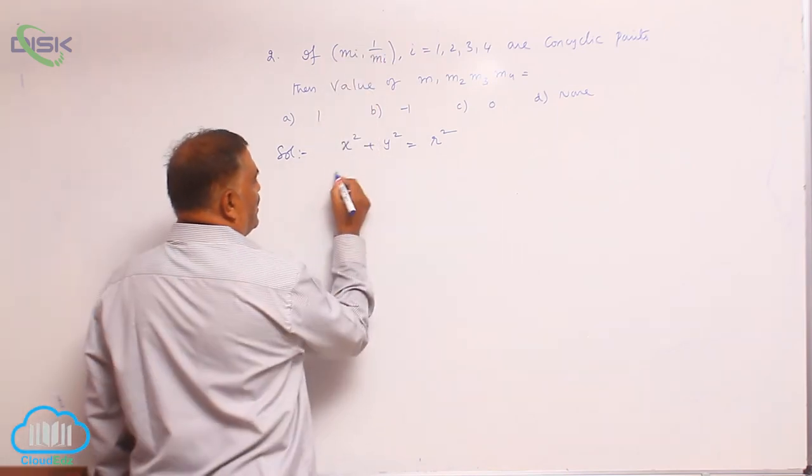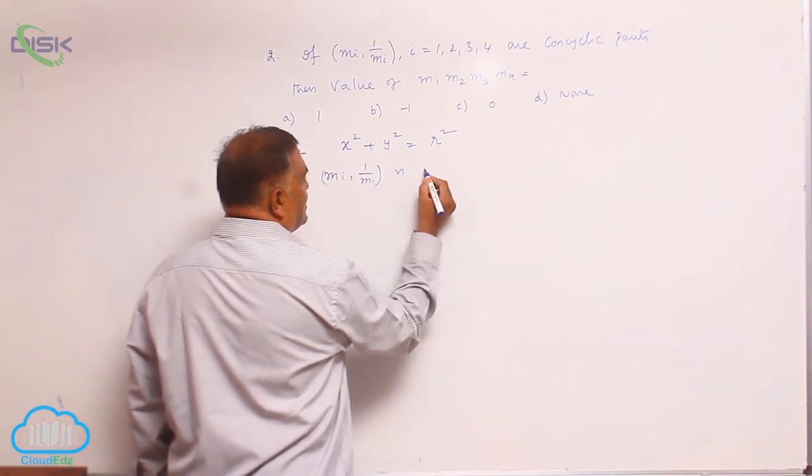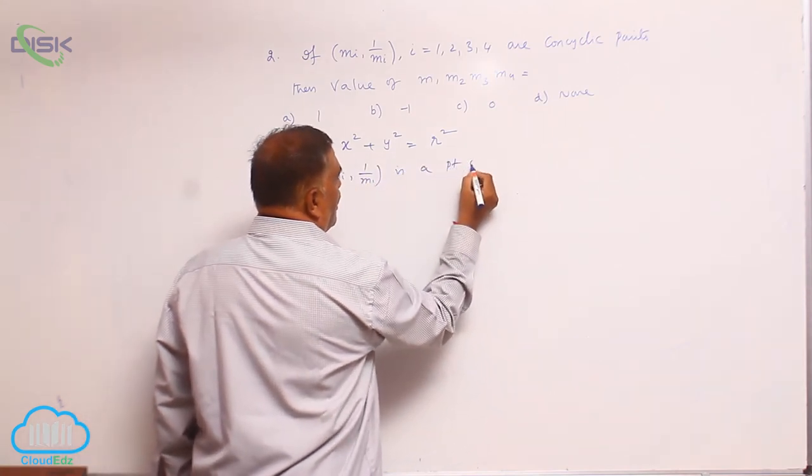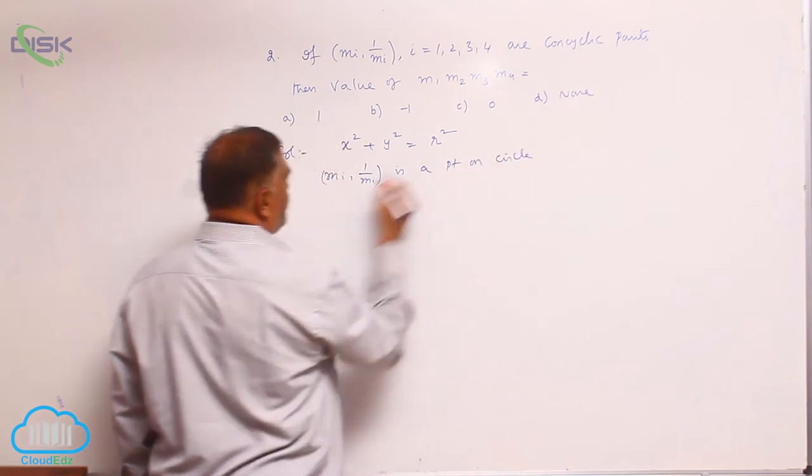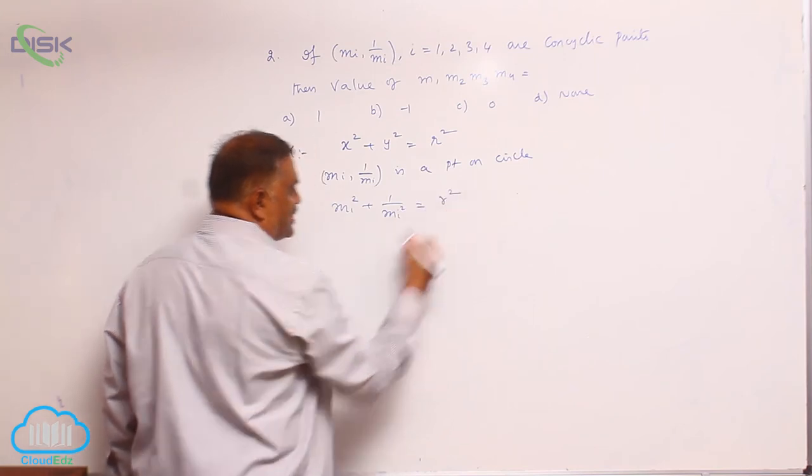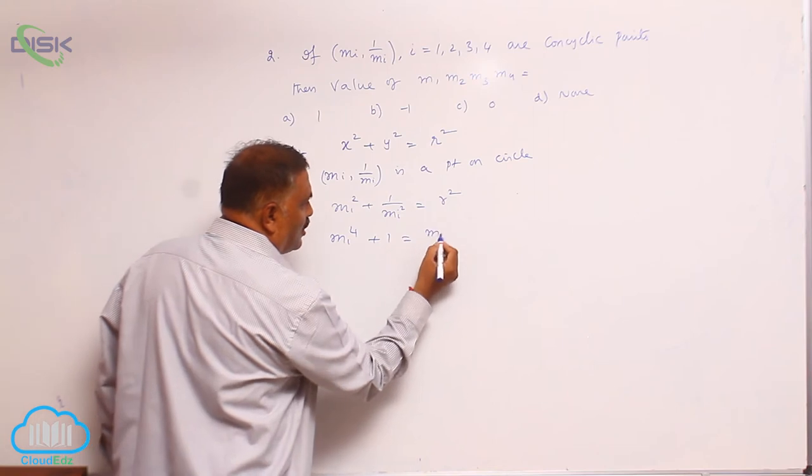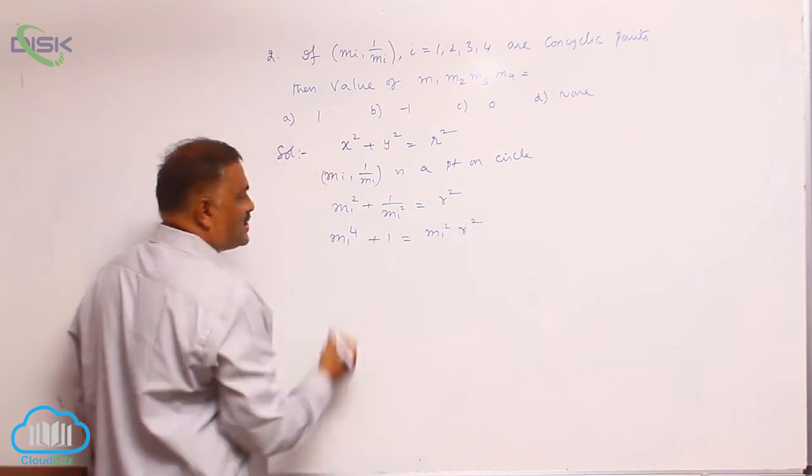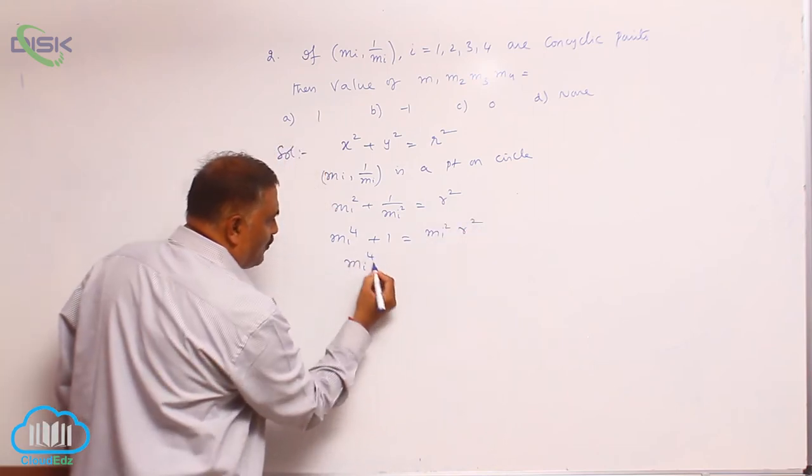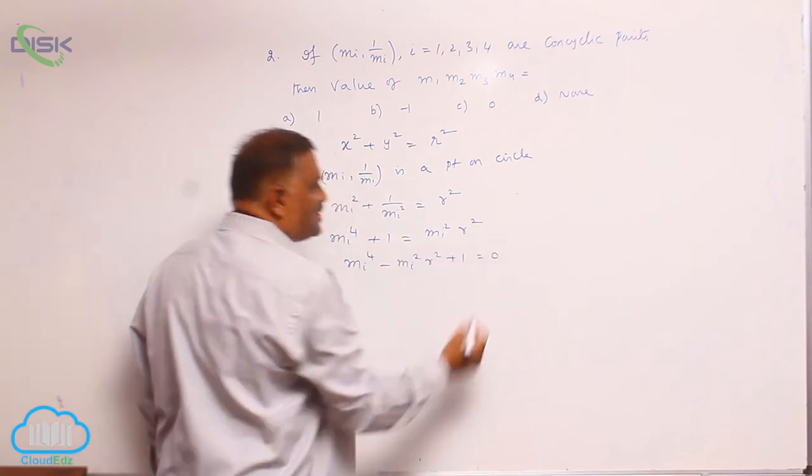Substitute this point. mi comma 1 by mi is a point on circle. Substitute here now. mi square plus 1 by mi square is equal to r square. mi to the power of 4 plus 1 is equal to mi square r square. mi power 4 minus mi square r square plus 1 is equal to 0.